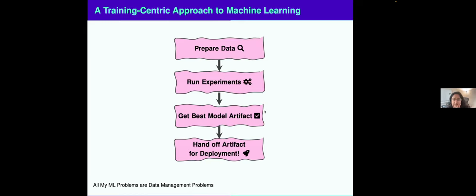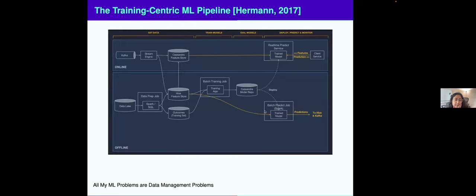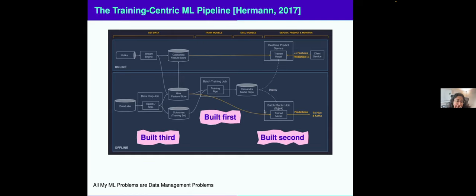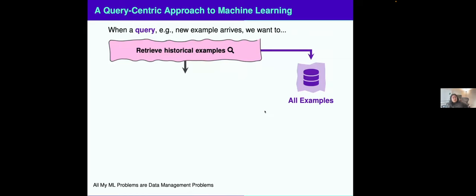What does this look like in the pipeline setting? It means your training job, your retraining job is really written first. Your predict job is written second, your data preparation and cleaning is written third. And then finally, all the online stuff like the queries themselves are an afterthought. This is not great. Maybe I'll present to you an alternative view, the idealistic view of how we would want to do machine learning, the query centric approach.